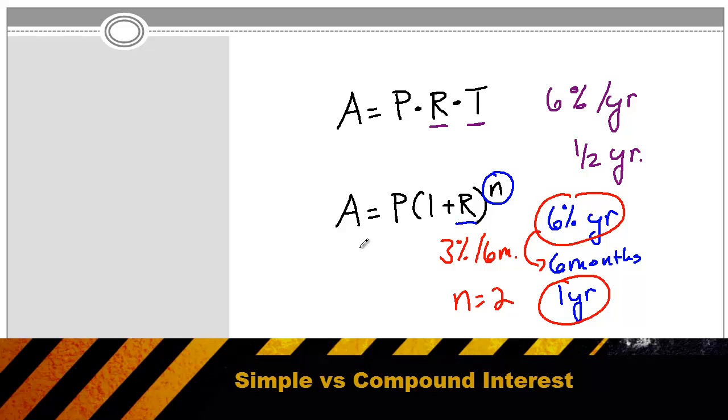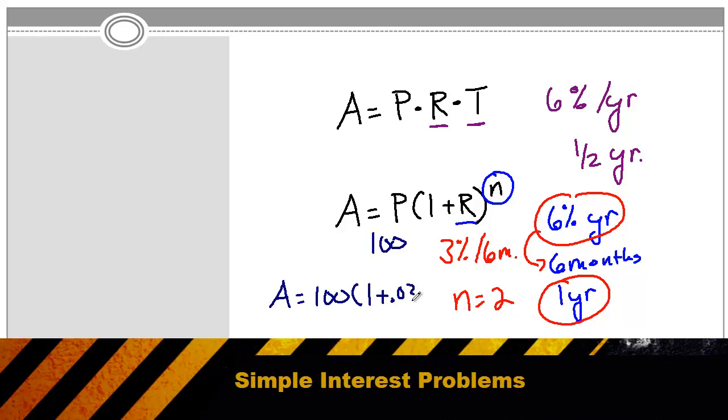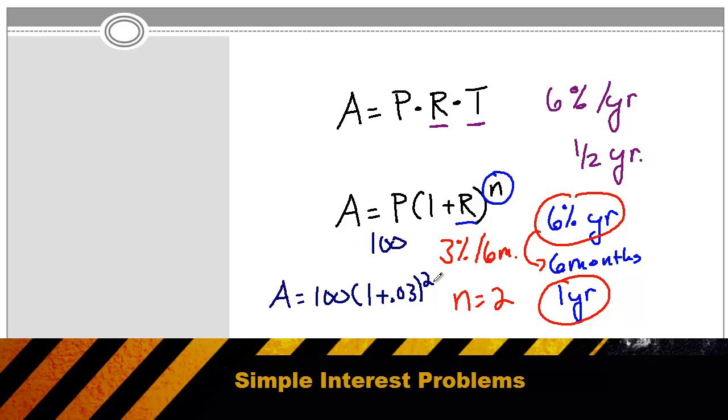So in this compound interest equation, if we initially invested $100, our equation would be the amount we earn is equal to $100 times 1 plus .03 squared. This problem, like most interest problems, simply comes down to recognizing which formula to use and then plugging in the numbers.